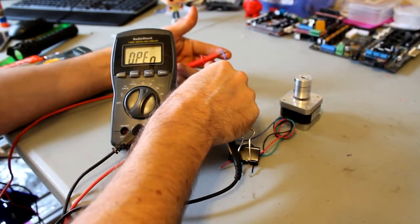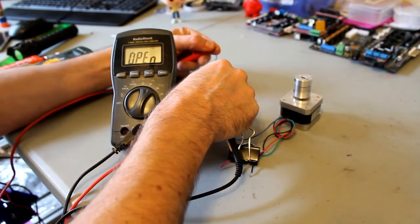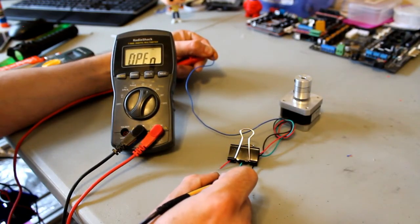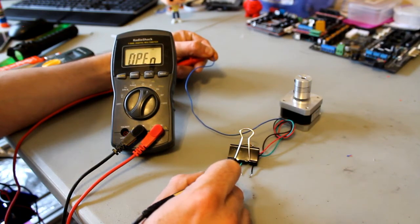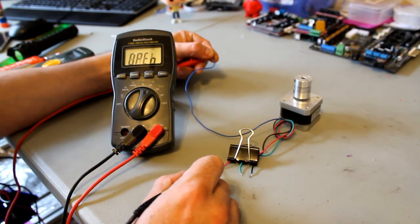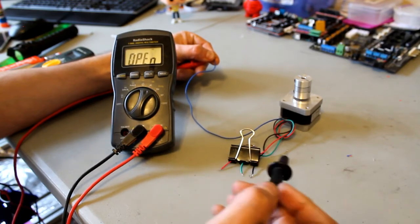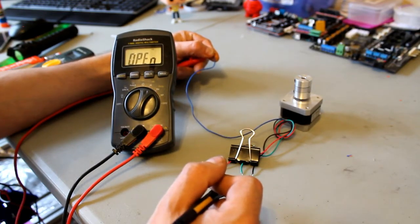I'm gonna grab one of the leads on my multimeter and hold it against the wire. Now with my other lead, I'm gonna test every single one of these wires. The black one doesn't do anything, the green one doesn't do anything, and the red one—the red one does give me the word 'short' on my screen and it makes the sound, which means that those two are a coil.